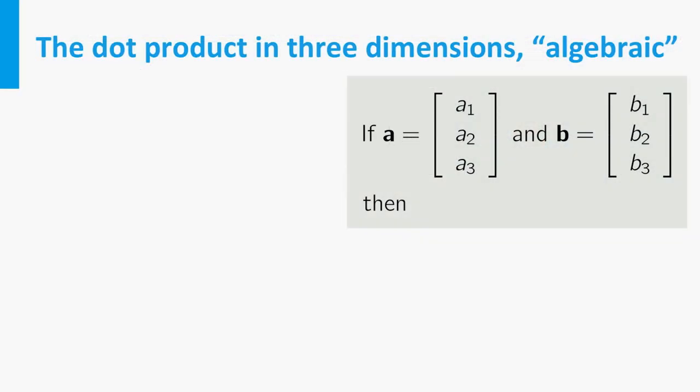It is shown for two general three-dimensional vectors A and B. To calculate the dot product, you just have to multiply the first components of the two vectors, then the second ones, and at last the third ones. Adding the results gives the dot product. With a little practice, everyone can do it.